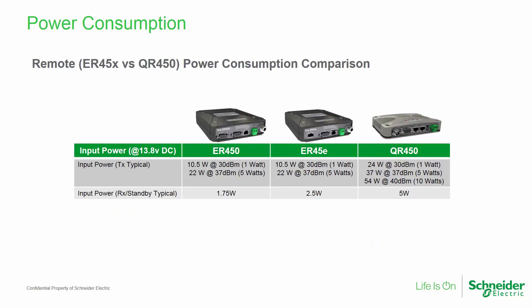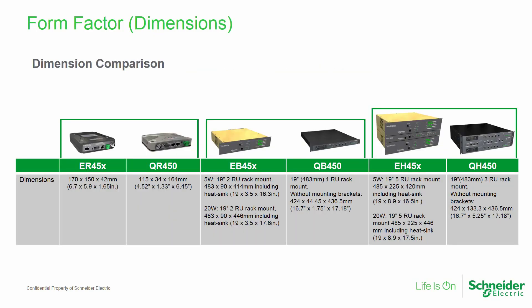Regarding power consumption, the QR450 requires about 5 watts of input power on receive, while the ER45E requires 2.5 watts. The QR450 also requires a larger power supply on transmit. The greater power consumption is primarily due to the much more powerful microprocessor. The QR450 dimensions are significantly different than those of the ER45E and ER450, though an adapter plate is available. The QB450 requires only 1 rack unit compared to the EB450's 2 rack units.